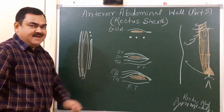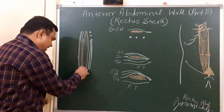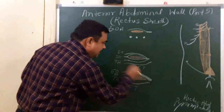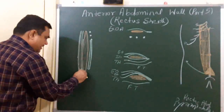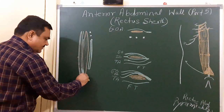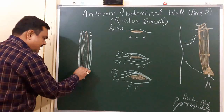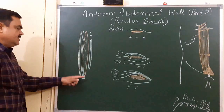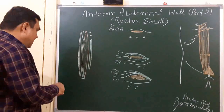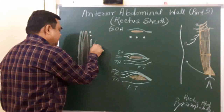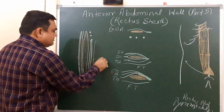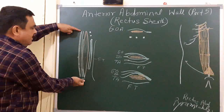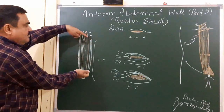Here is the anterior lamina of internal oblique. This is the line where the posterior covering finishes and forms the arcuate line. The transversus abdominis also reaches here, so here you can see the external oblique, internal oblique, and transversus abdominis aponeurosis present. The internal oblique and transversus abdominis form the conjoint tendon at the lower level. The most posterior covering is the fascia transversalis. The anterior covering is complete and the posterior covering is incomplete.